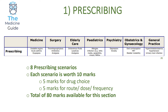The first section of the PSA exam is the prescribing section. There are 80 marks available across eight prescribing scenarios, each worth 10 marks. A maximum of five marks is awarded for choosing the correct drug, and another five marks for prescribing the medication with the correct dose, frequency, and route.